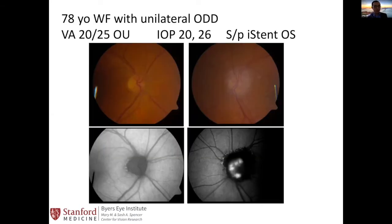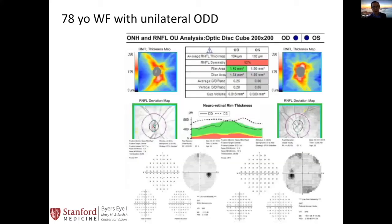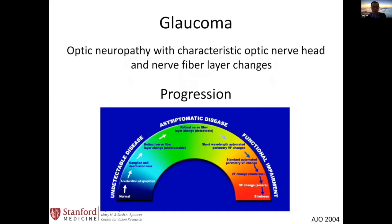I'd like to introduce a patient I saw in clinic — a 78-year-old lady with unilateral optic nerve drusen on the left side. She has very good vision of 20/25 in both eyes, and pressure is elevated at 26 on the left. She had already undergone an eye stent implant, which is why she came to see me. On her optic nerve photos, the drusen is very clear on the left, while the right looks quite good. Her OCT shows very healthy optic nerve RNFLs. On Humphrey Visual Field, she has some nasal defects showing on the left, while the right is quite full.